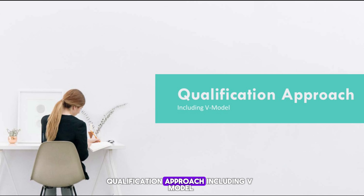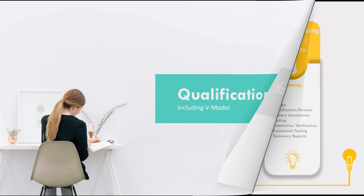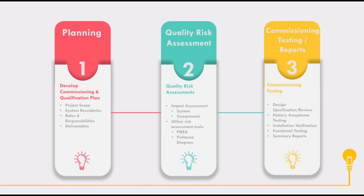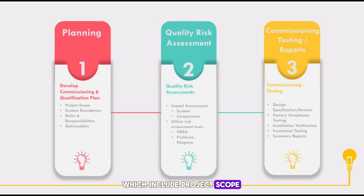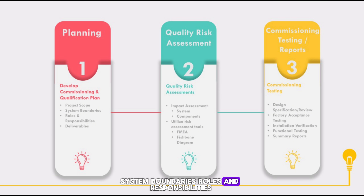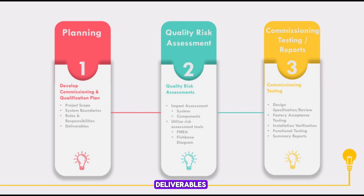The Qualification Approach includes the following model. Step 1 — Planning: develop a commissioning and qualification plan, which includes project scope, system boundaries, roles and responsibilities, and deliverables.